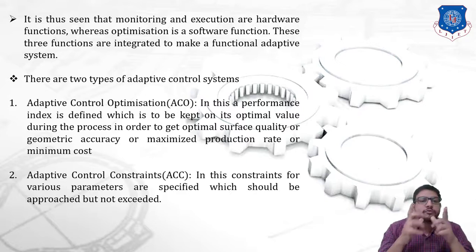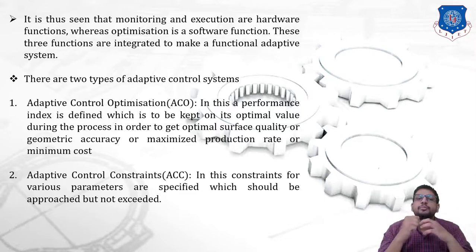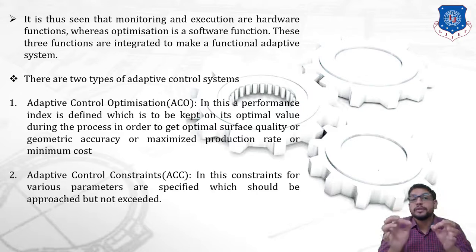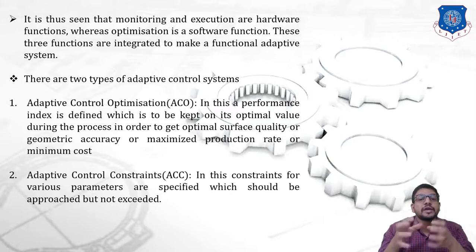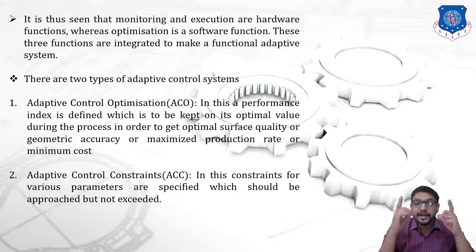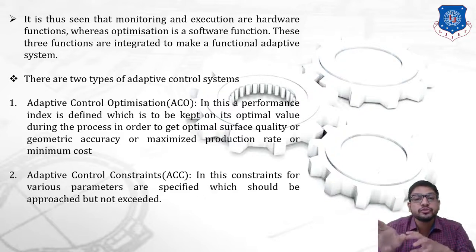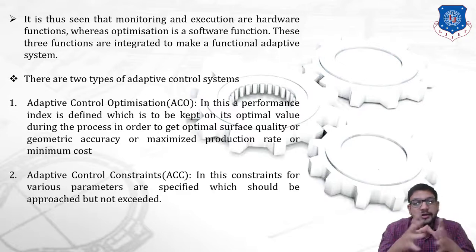There are basically two types of adaptive control system. The first is Adaptive Control Optimization, also called ACO. In this system, a performance index is defined — a predefined index to be kept at its optimum value during the process — in order to get optimal surface quality, maximum geometric accuracy, maximum production rate, or minimum cost. Based on that predefined value, it tries to bring the actual values to these optimum values.